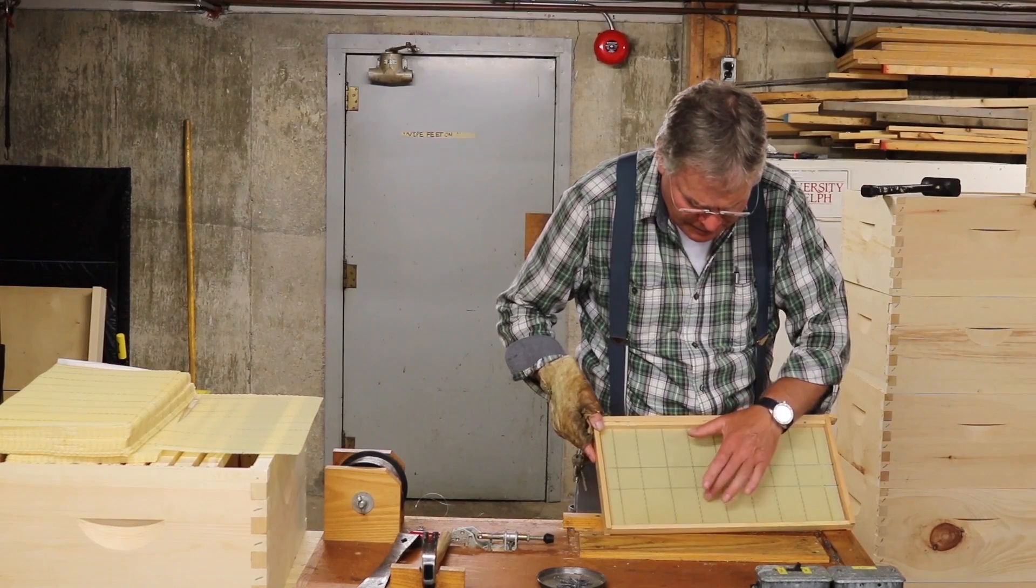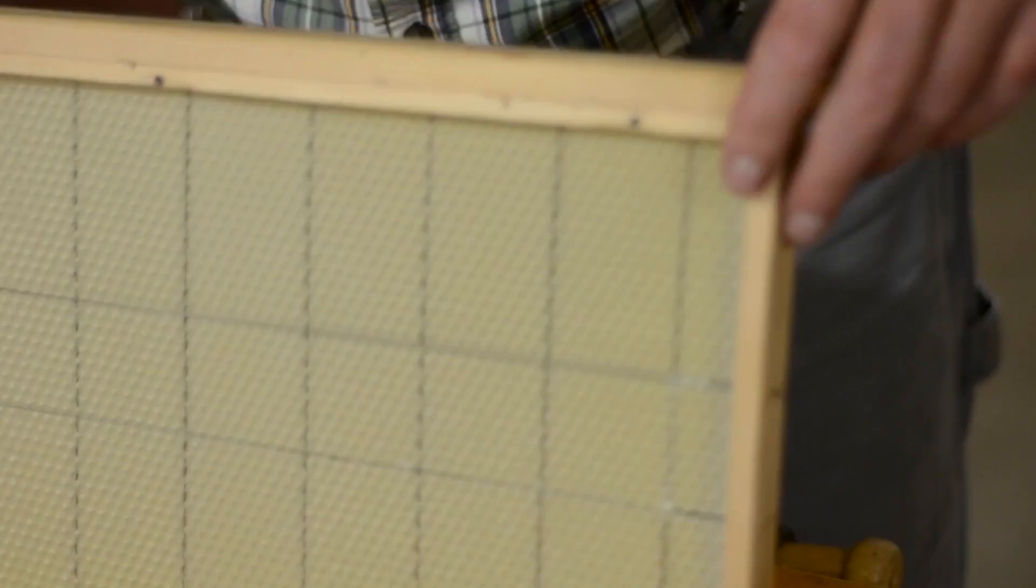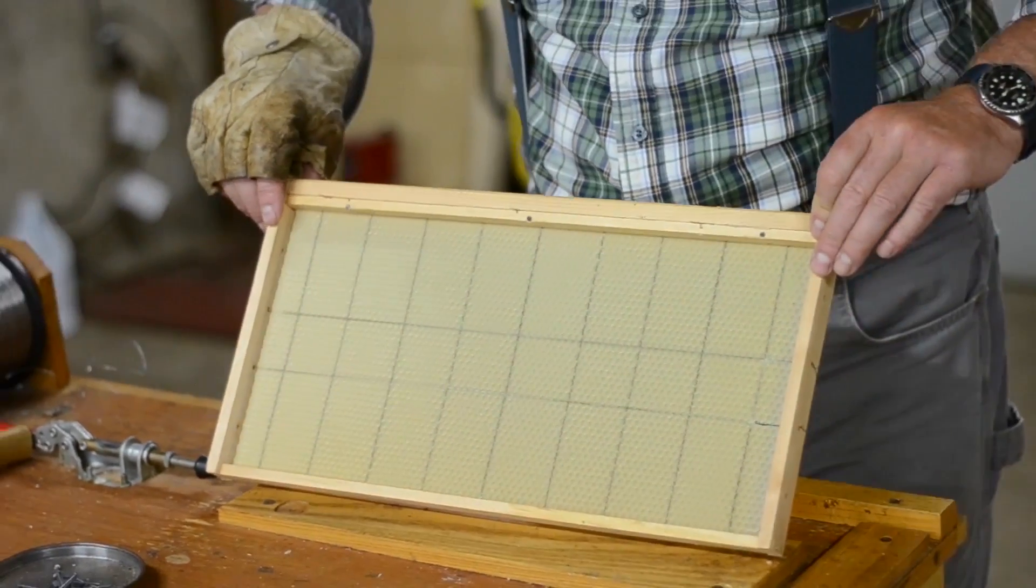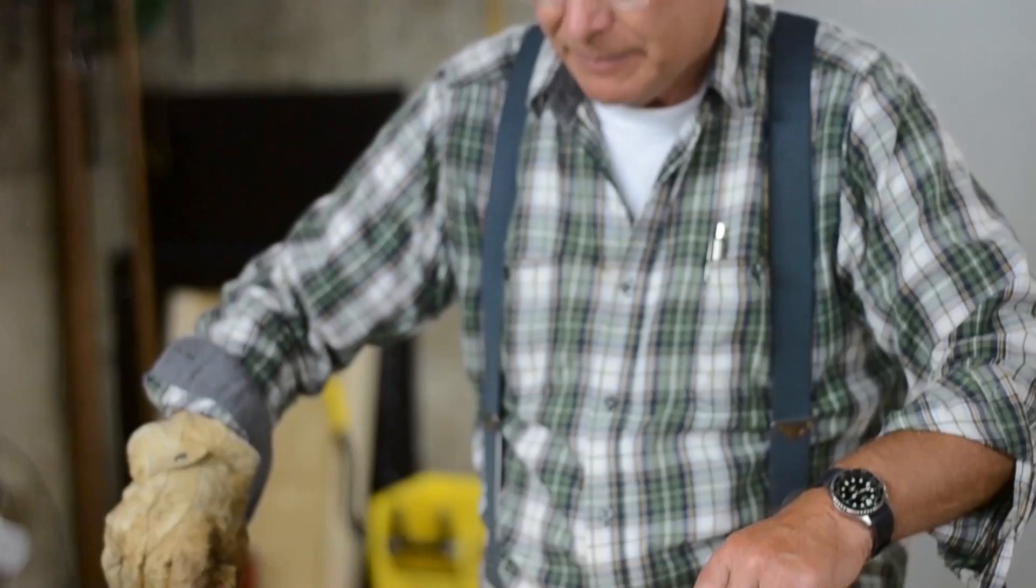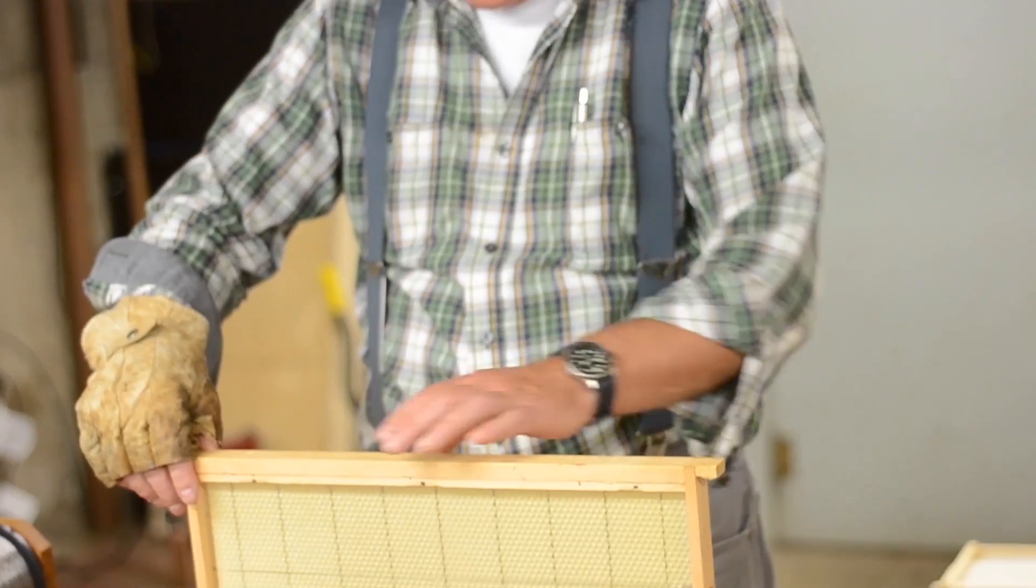So now you can see that it's welded in place. And that will hold the frame flat while the bees build it but you do have to handle those frames very carefully because it's easy to pop it off the wax wire and for the wax to be shattered.